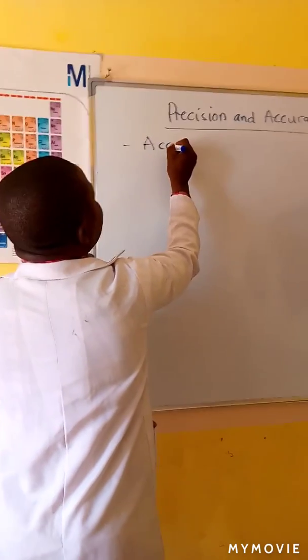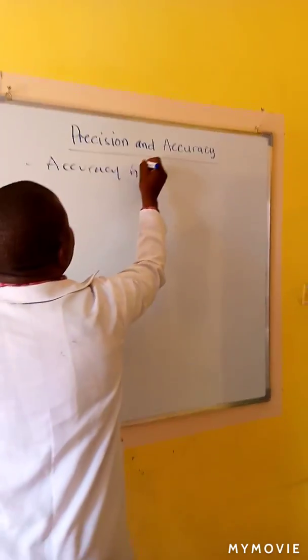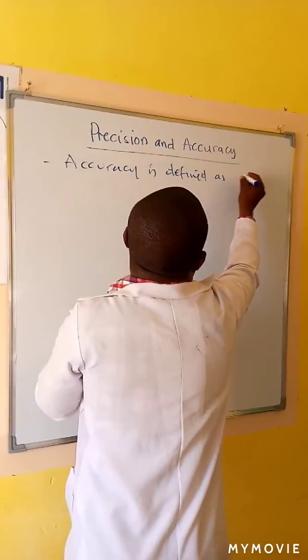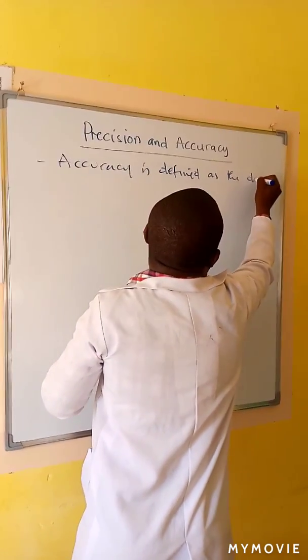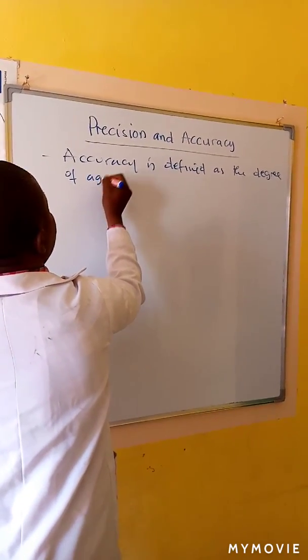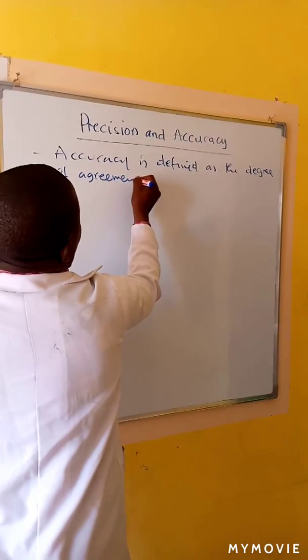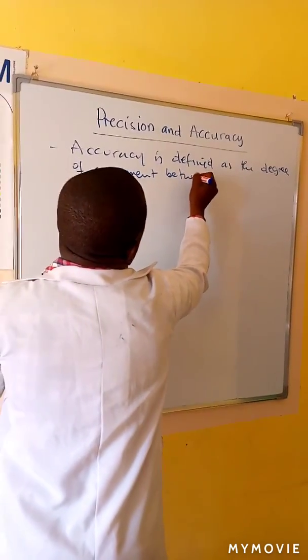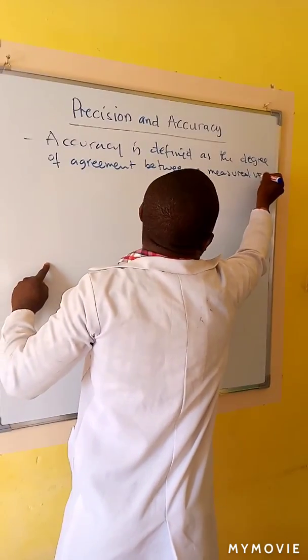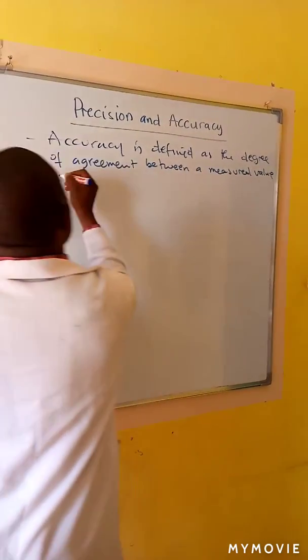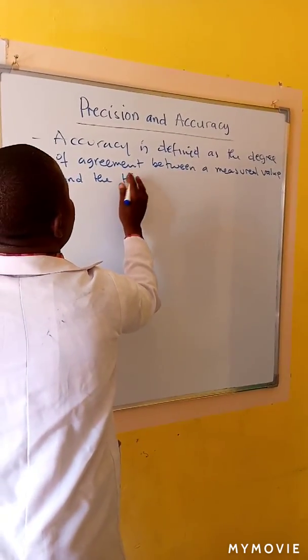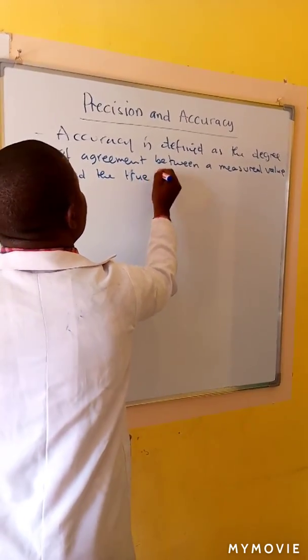Accuracy is defined as the degree of agreement between a measured value and the true value.